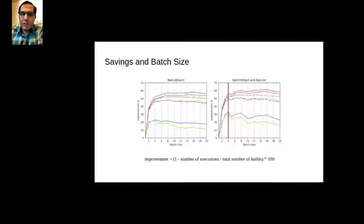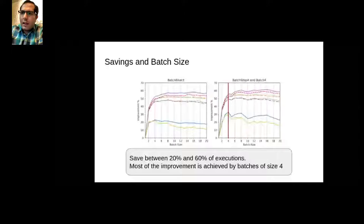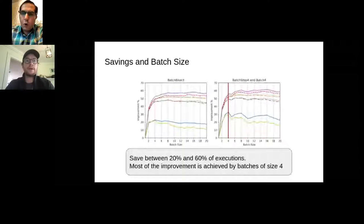We also experimented with different batch sizes across three batching approaches: Batch Bisect (normal bisection), Batch Stop Four, and Batch Four (the vertical red line). Using ten projects from the Travis Torrent dataset, most of the improvements are achieved by a batch size of four. Unfortunately we're out of time, so the risk batching discussion will have to continue in the Q&A part.